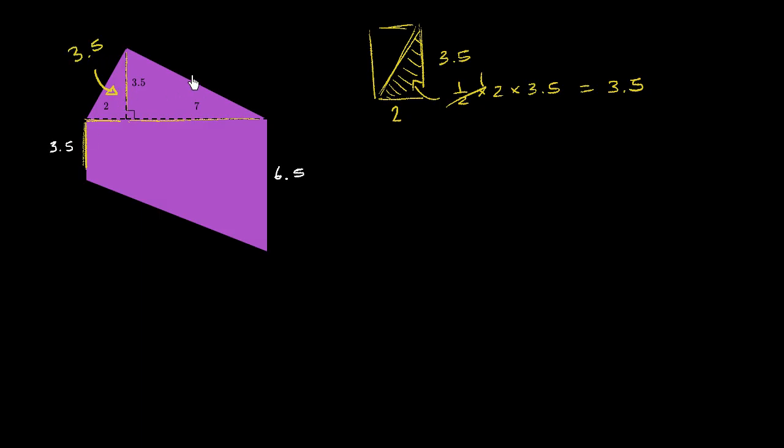Now let's think about the area of this triangle right over here. Well once again, we have its height is 3.5, its base is 7. So its area is going to be 1 half times 7 times 3.5. 1 half times 7 is 3.5 times 3.5, and I'm going to multiply that times 3.5 again. So let's figure out what that product is equal to.